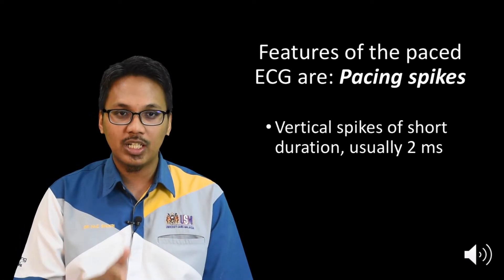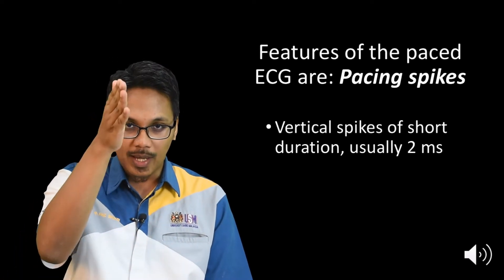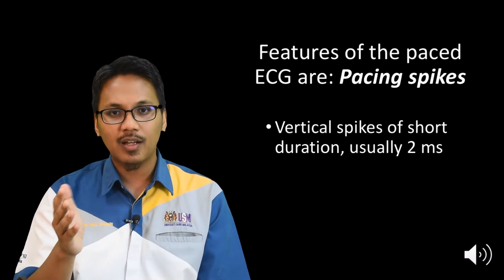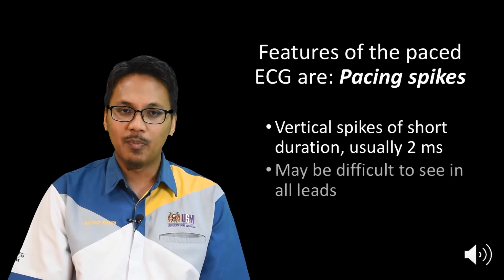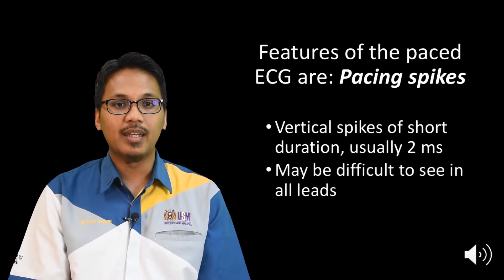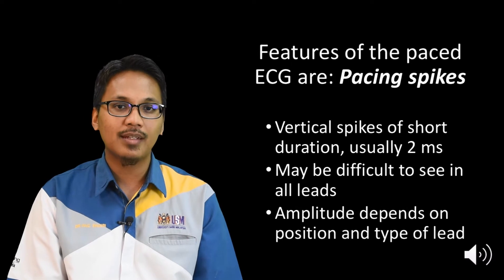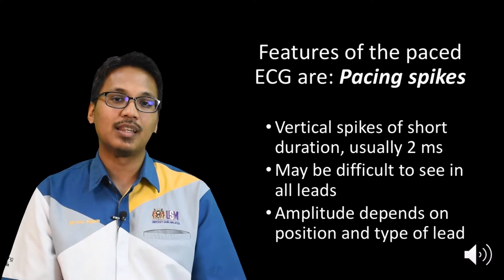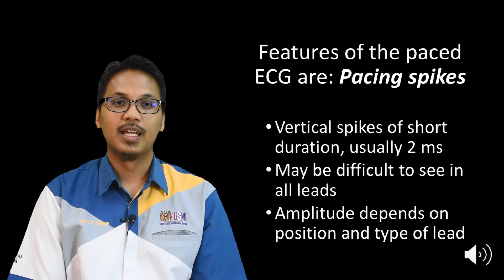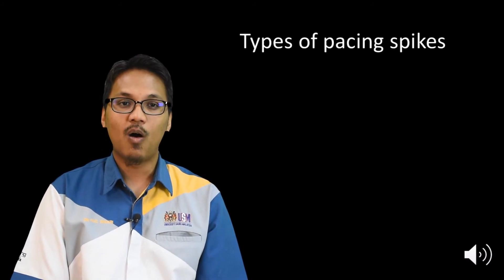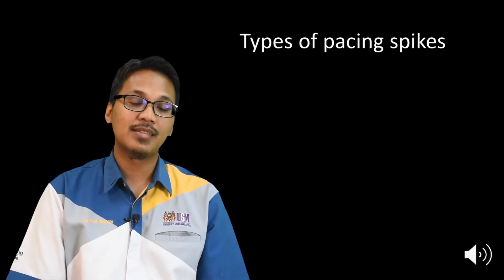The key feature of a paced ECG is what we call a pacing spike. A pacing spike is a vertical spike of short duration, usually roughly around two milliseconds. It may be difficult to see in all leads, and the amplitude will depend on the position as well as the type of the lead.